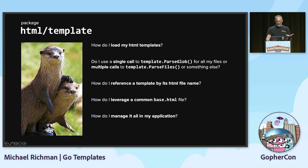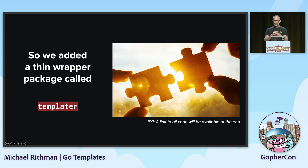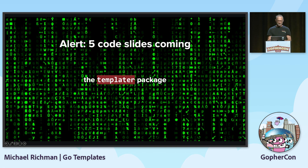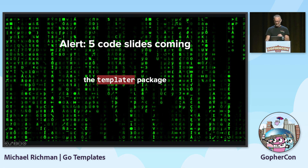In the end, how do I manage all that in my application? We added a thin wrapper package called "templater" to do all these things and make it work in the straightforward way that we want. I'll have a link at the end to a full working example. Alert: there are five code slides coming.